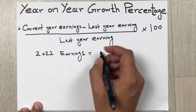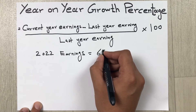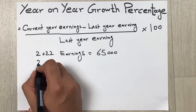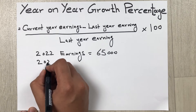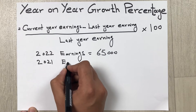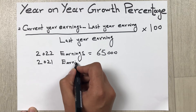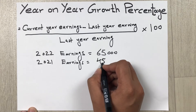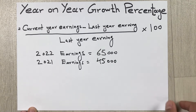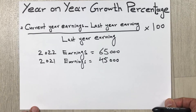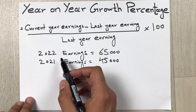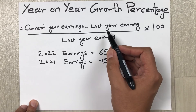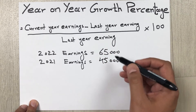are equal to 65,000, and your 2021 earnings are 45,000. So 2022 is your current year earnings and 2021 is your last year earnings.